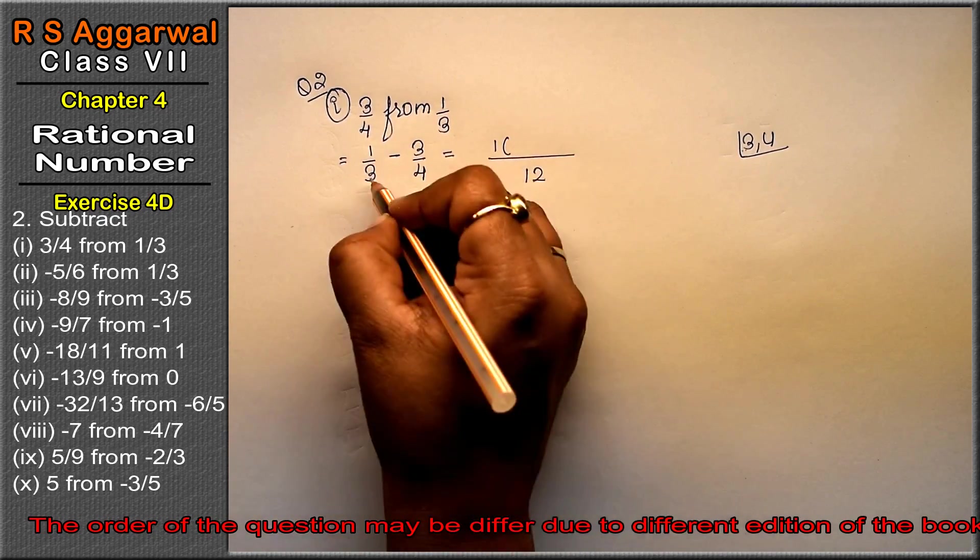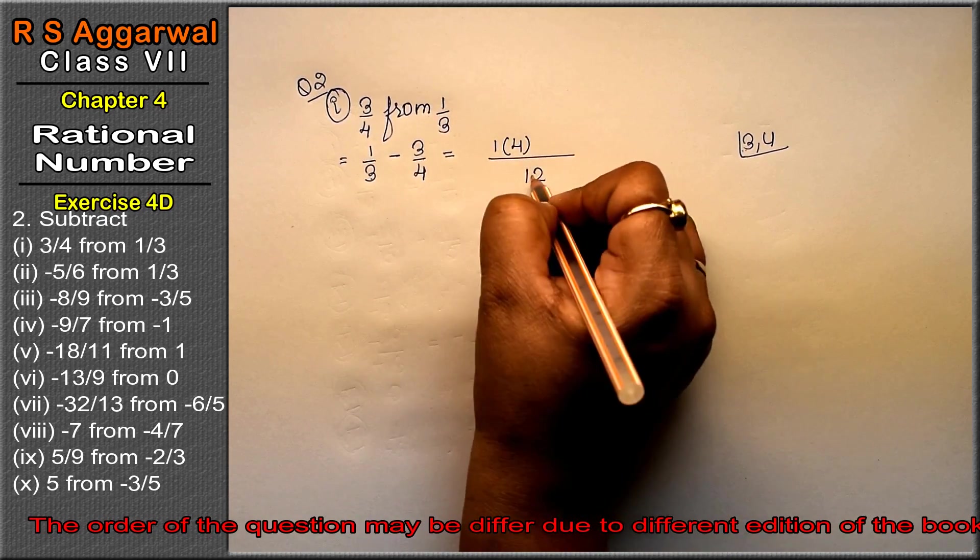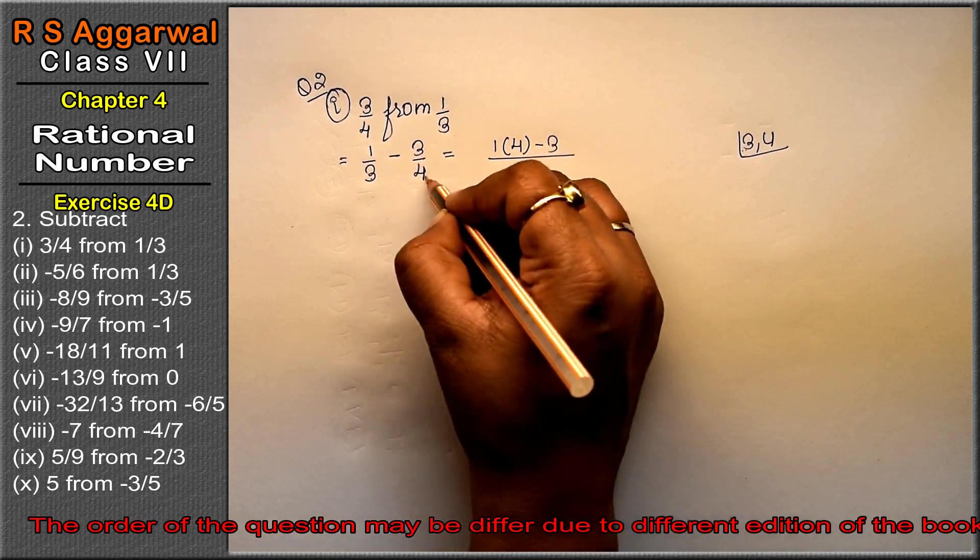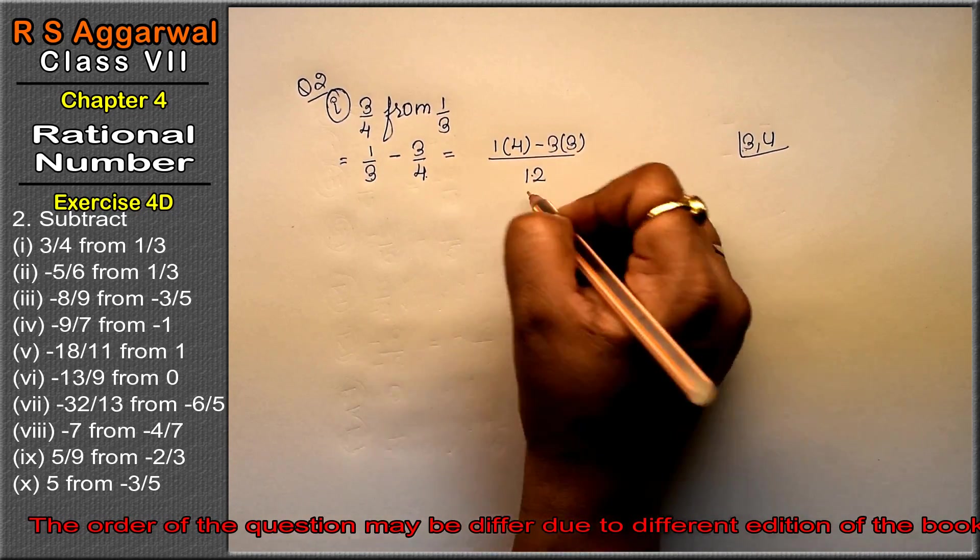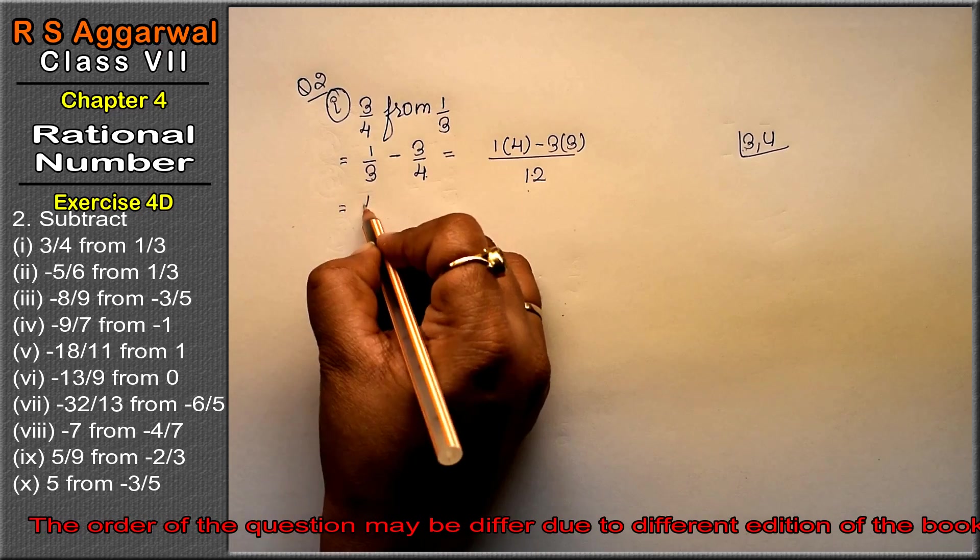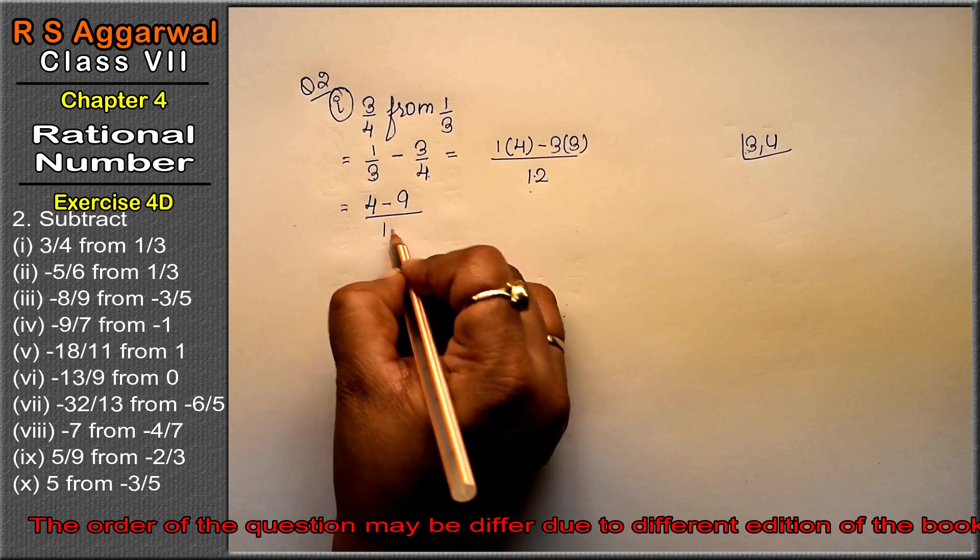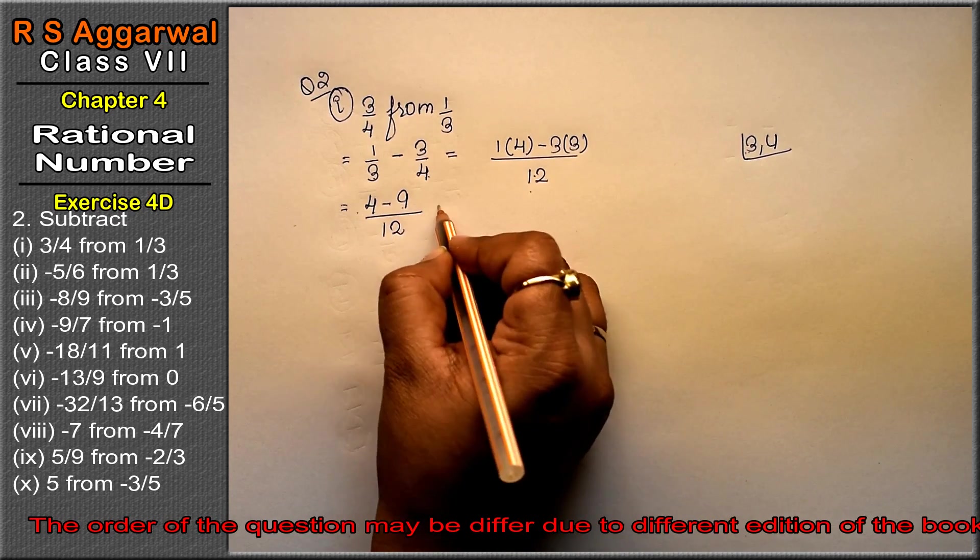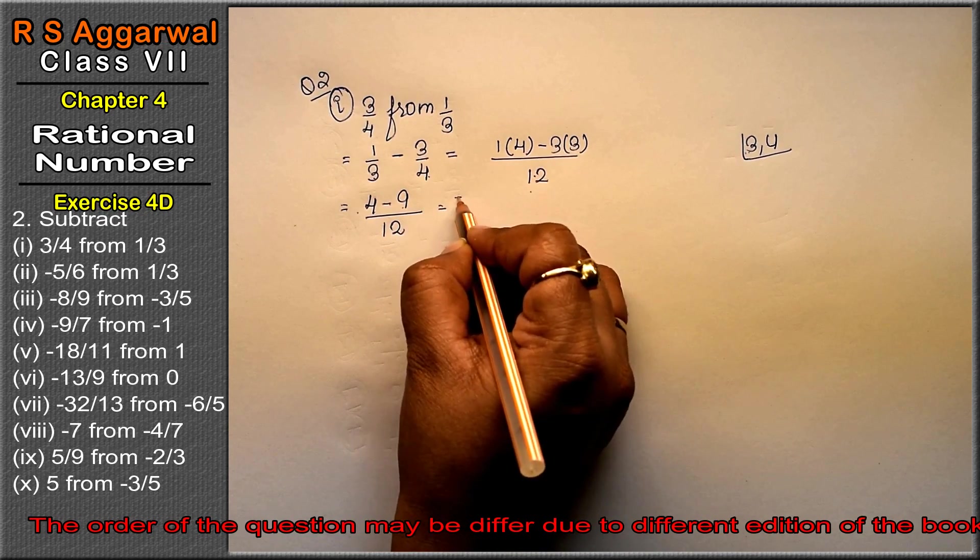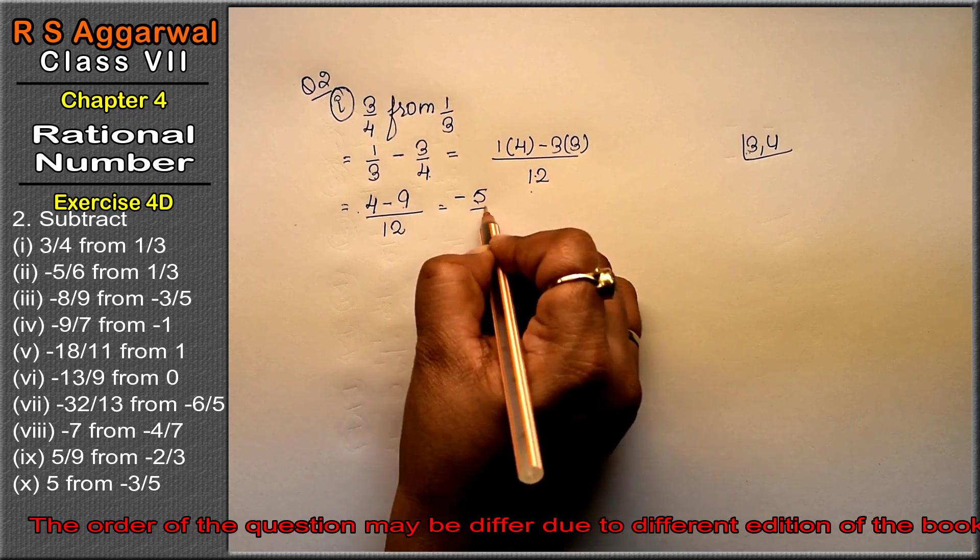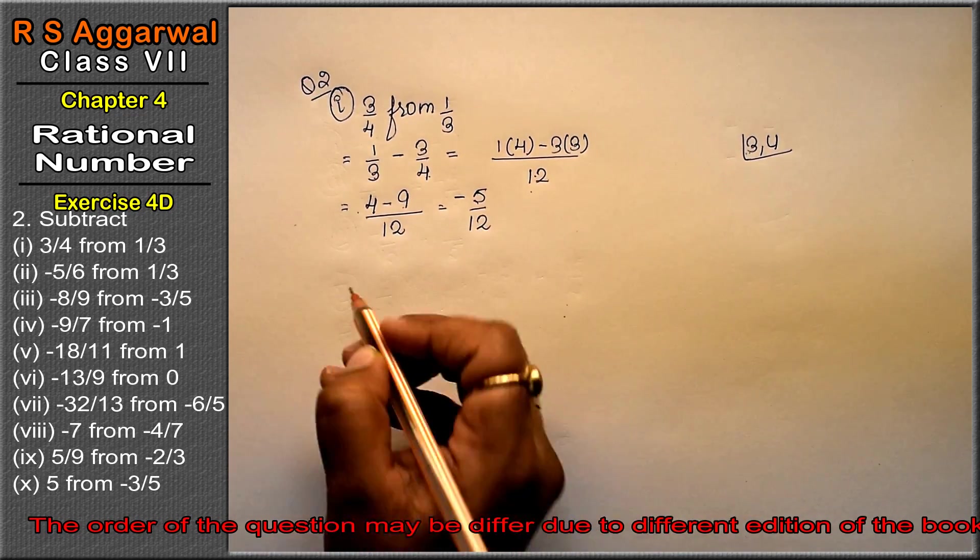Now 1 multiplied by 4 is 4, minus 3 multiplied by 3 is 9, upon 12. If it is plus or minus, then the sign will be of the bigger one. So we will subtract. Minus 5 upon 12 is the answer.